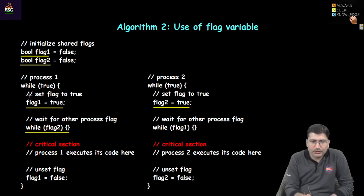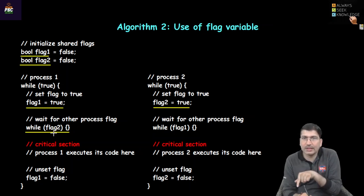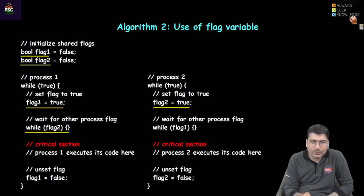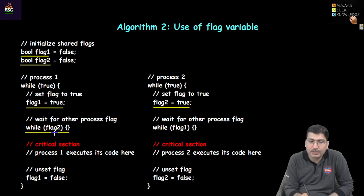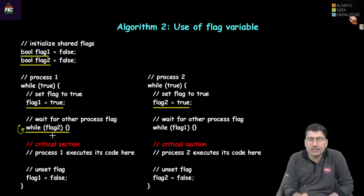If process 1 sets its own flag and flag 2 is also true, that means another process is possibly executing inside the critical section. So process 1 should not proceed further, and the while loop becomes infinite. Until flag 2 is false, process 1 cannot reach the critical section and this loop keeps executing.